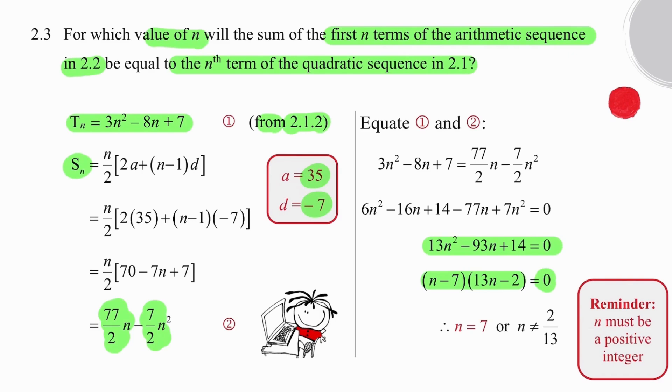From this we can read off two answers: n equal to 7 or n equal to 2/13. We discard the fraction and we retain n equals 7 as the only solution. So if we add the first seven terms of the arithmetic sequence, we will get the same result as the seventh term of the quadratic pattern.